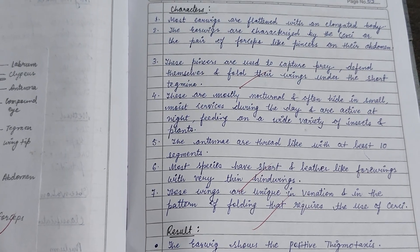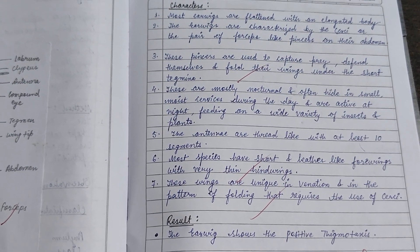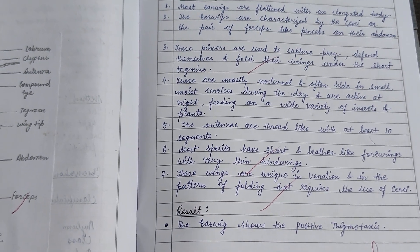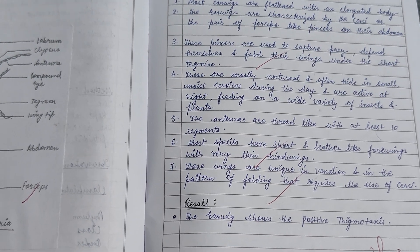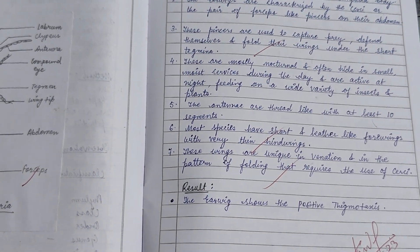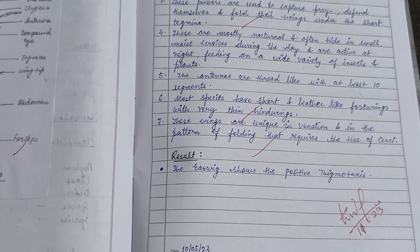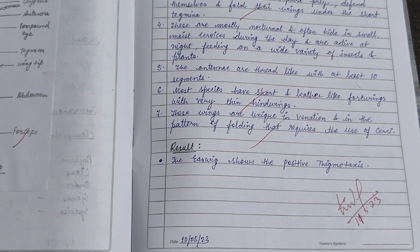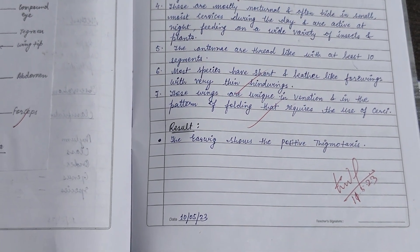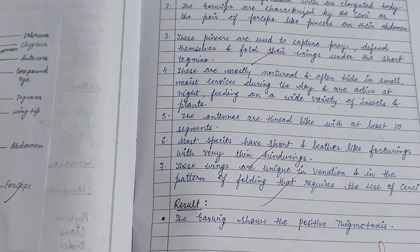The characters of the earwig are as follows: presence of three pairs of legs, tegumen, wing tip, abdomen, forceps, antenna, and presence of the labrum. The mouth parts include the labrum, clypeus, and antenna. There is also a palp for the sensory receptors.